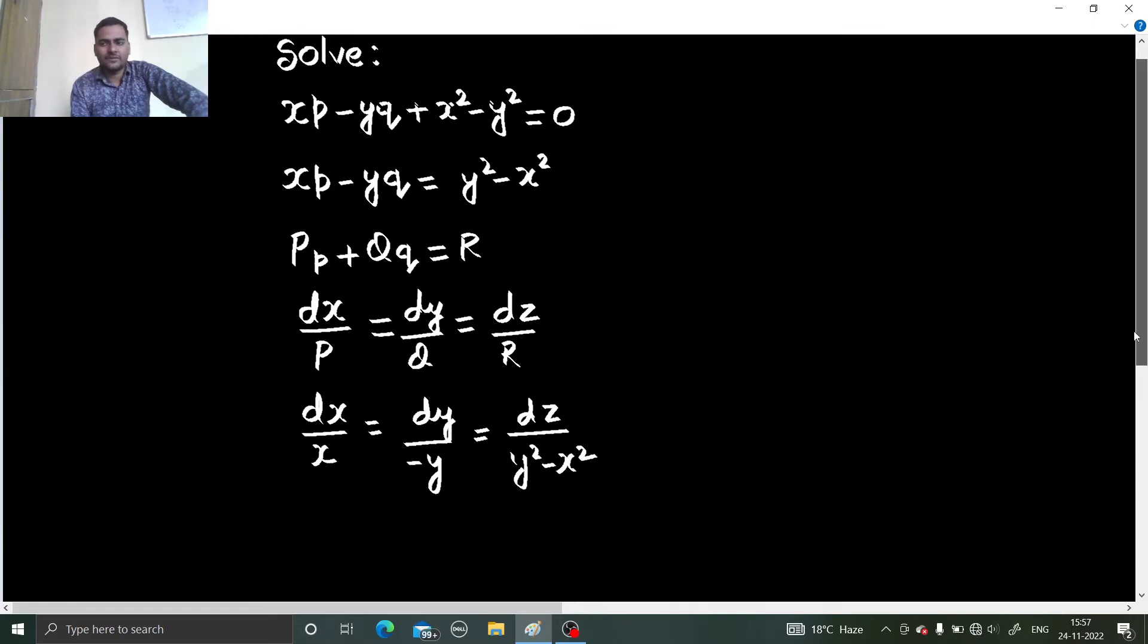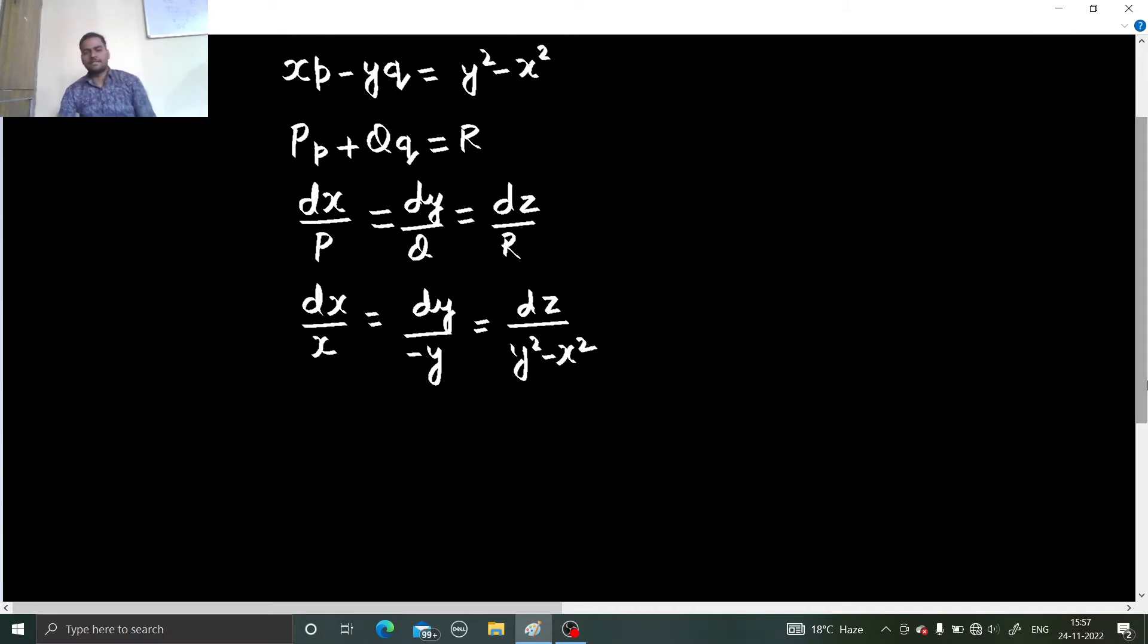This is the basic step you need to follow and we have two subcategories in Lagrange's method. First one is method of grouping, if that works, that means if by just equating this, you are getting an equation, that's fine. Try to get equations. If you get one, try to extract that one also. If not, then you have to move to method of multiplier.